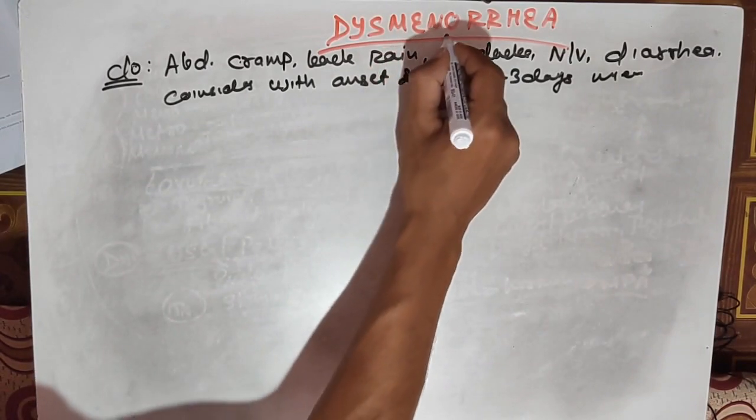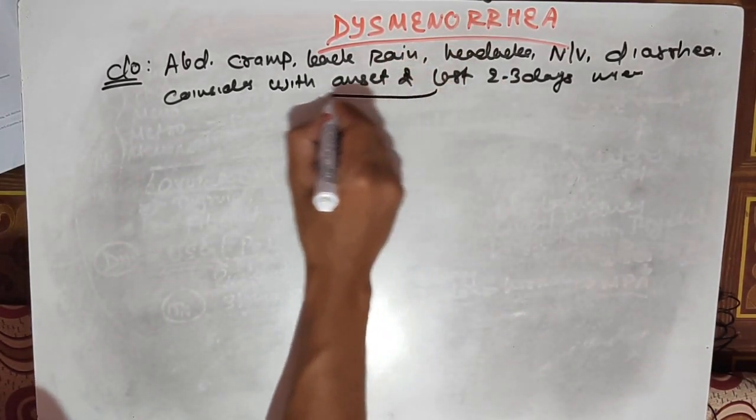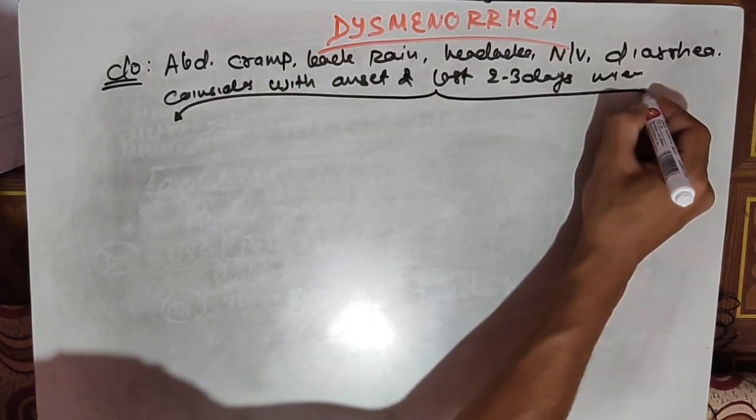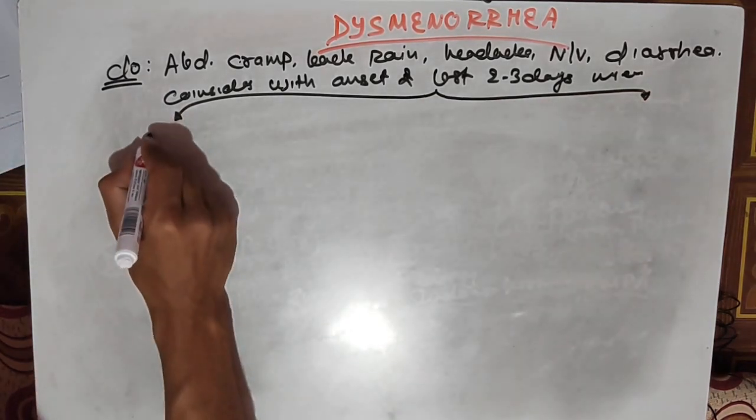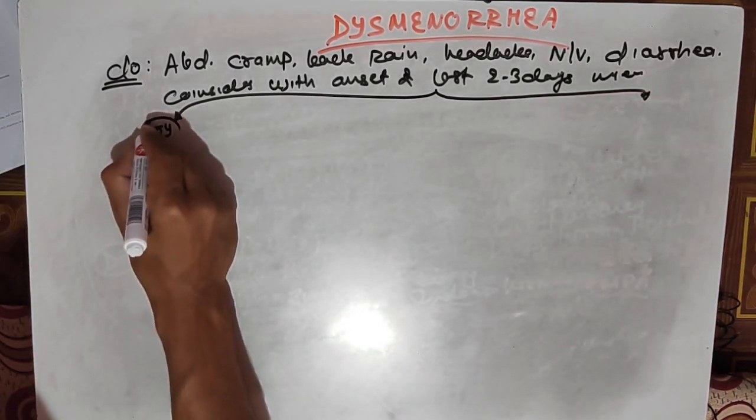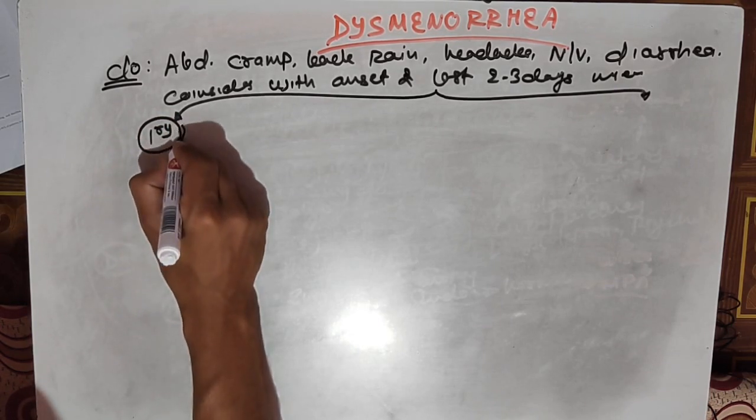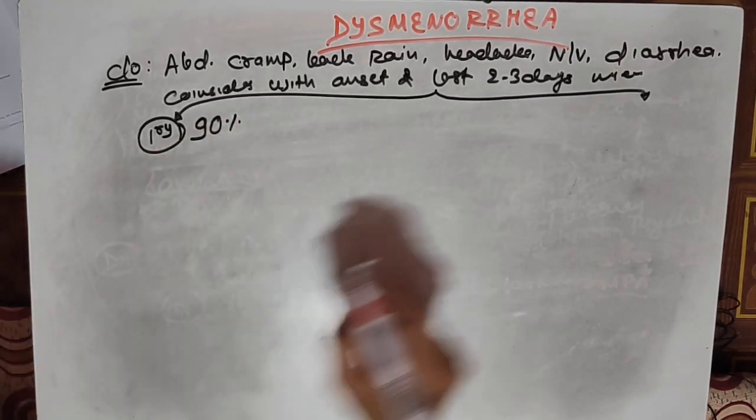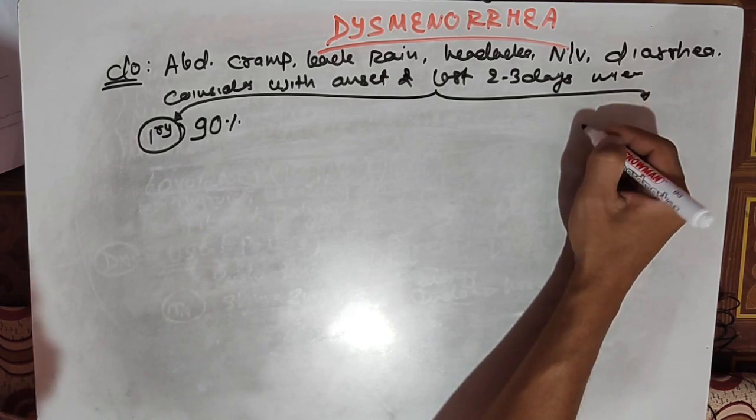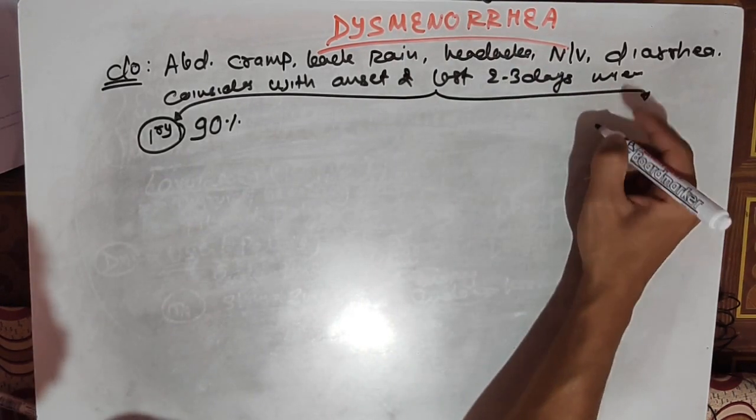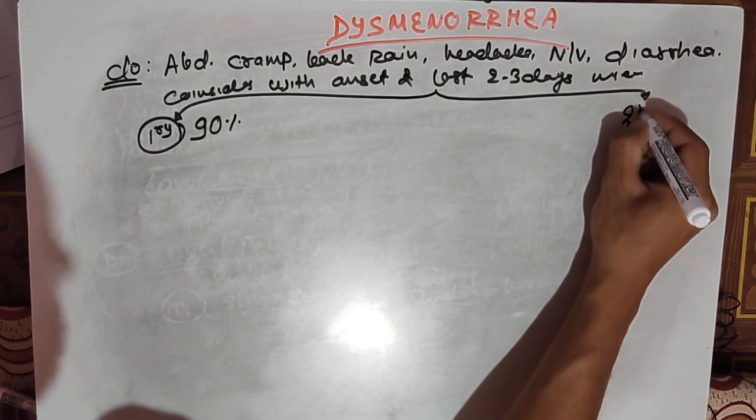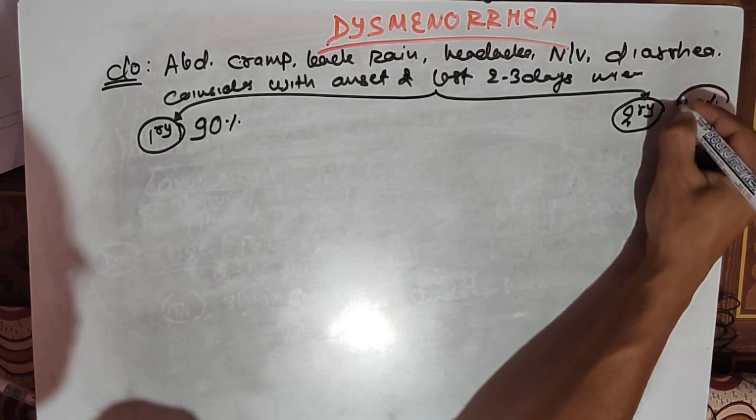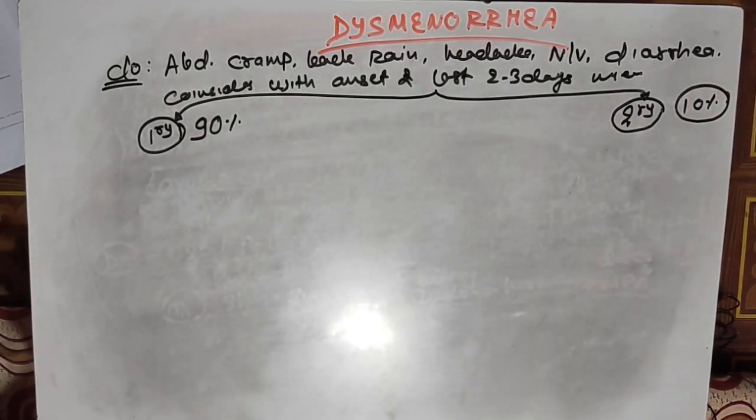Dysmenorrhea can be divided into two types. If there is no underlying cause for painful menstruation, it's called primary dysmenorrhea, which constitutes about 90% of cases. If there is pelvic pathology causing painful menstruation, it's secondary dysmenorrhea, which constitutes the remaining 10%.